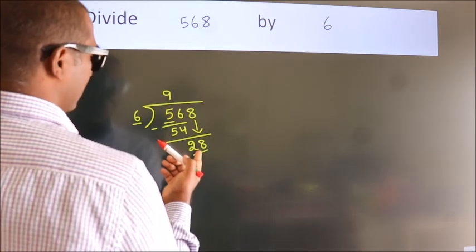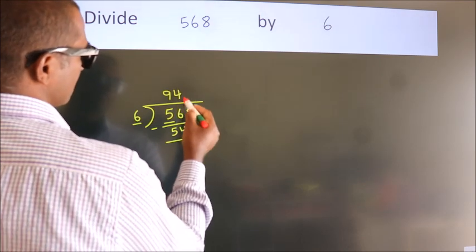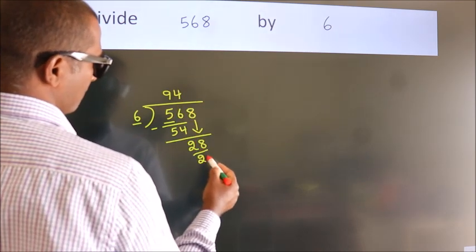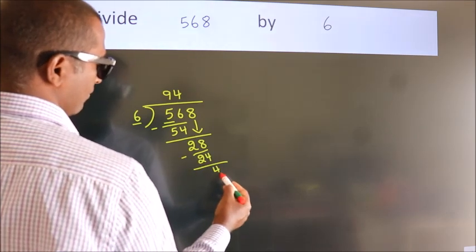A number close to 28 in the sixth table is 6 fours, 24. Now we subtract. We get 4.